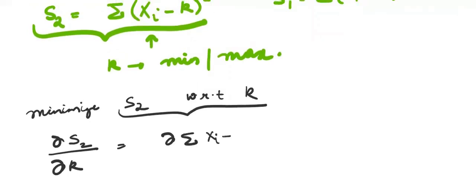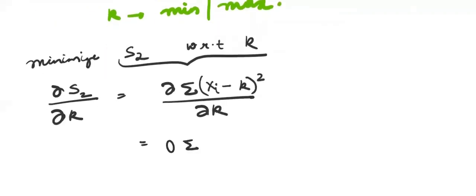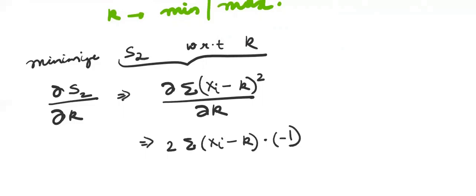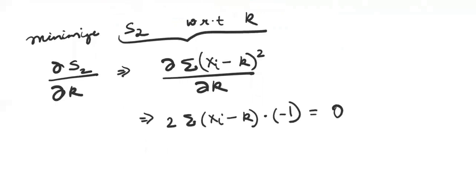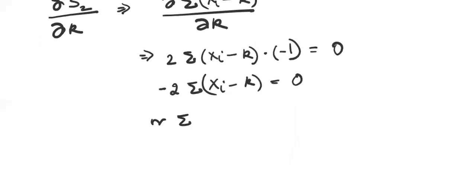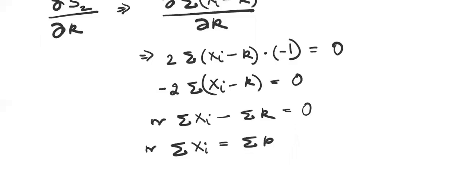Differentiating the summation of (xi minus k) squared with respect to k gives 2 times summation of (xi minus k) times minus 1. Setting this equal to zero gives minus 2 times summation of (xi minus k) equals 0, or summation of xi minus summation of k equals 0.